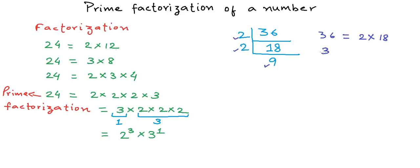So now 36 can be written as 2 into 2 into 9. This is one possible factorization, but it is still not the prime factorization because we can reduce 9 further. Now 2 cannot divide 9, but 3 can divide 9 — so the smallest number that can divide 9 is 3.